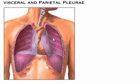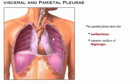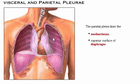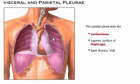In this view, the lung has been removed to show the posterior portion of the parietal pleura. Recall that the parietal pleura lines the mediastinum, the superior surface of the diaphragm, and the inner thoracic wall.